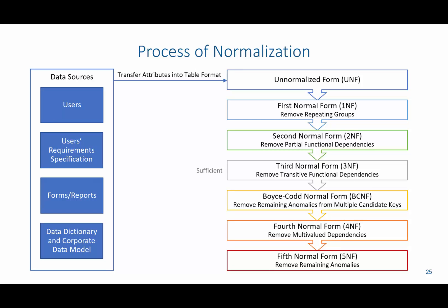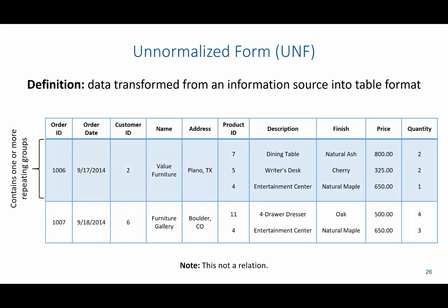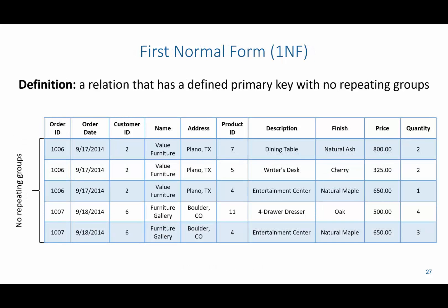In unnormalized form, the data is transformed from the information source into table format. Notice that from product ID over, we have multiple values in a single cell — this is what we call repeating groups. This is not a relation because it has repeating groups. So what we're going to do is take our unnormalized form and convert it to first normal form, which means we remove the repeating groups so every single value has its own cell.